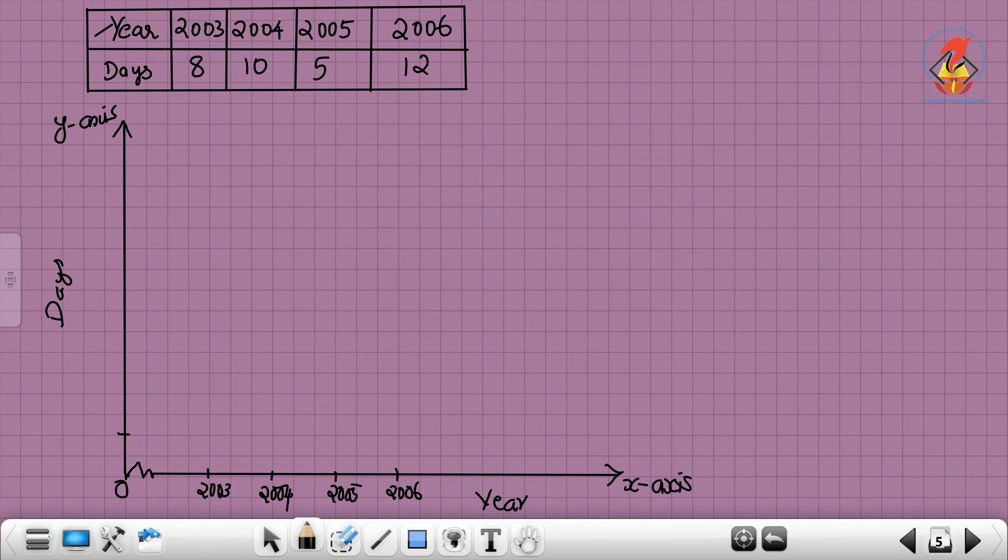Mark the y-axis: 2, 4, 6, 8, 10, 12. First one, 2003 has 8 days. 2004 has 10 days. 2005 has 5 days, which is between 4 and 6. 2006 has 12 days. Join these four points.